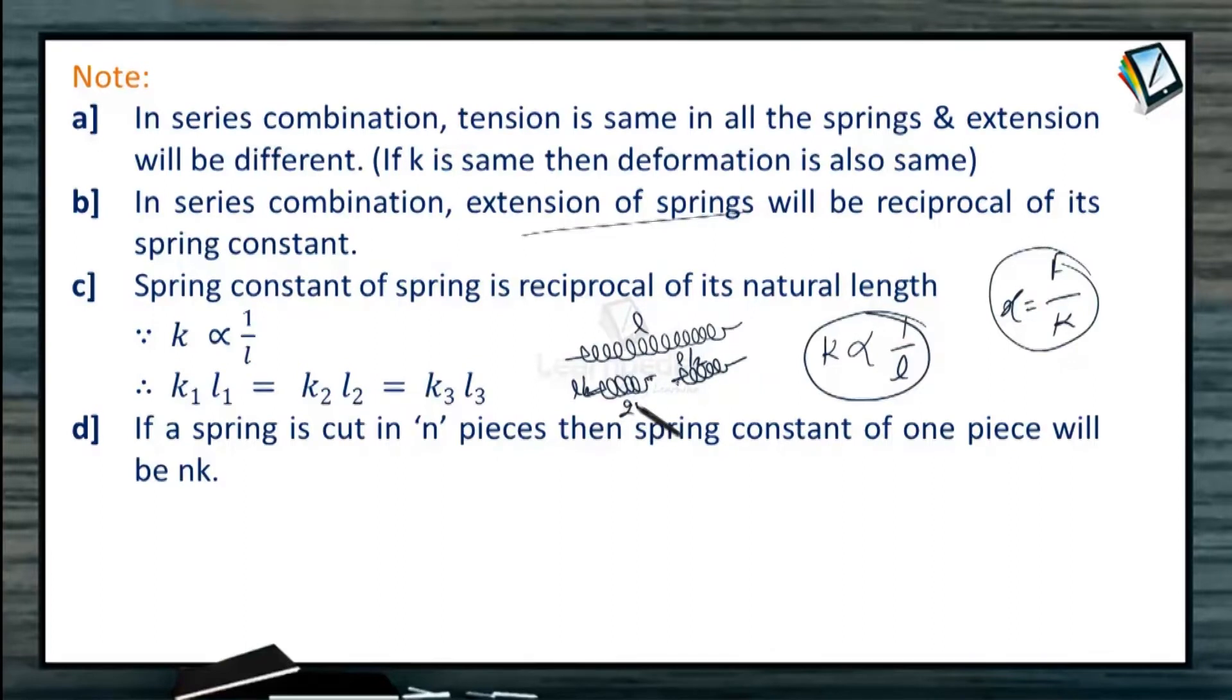they must produce the same spring constant. So 2K, 2K will be the spring constant of the individual part. So that reciprocal of them when added and then taking the reciprocal will yield the spring constant K of the original springs.